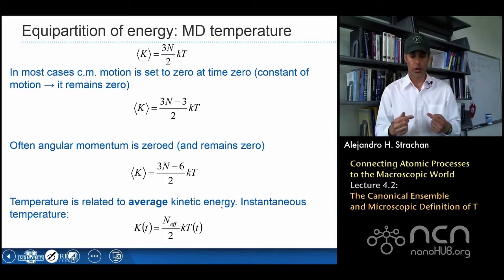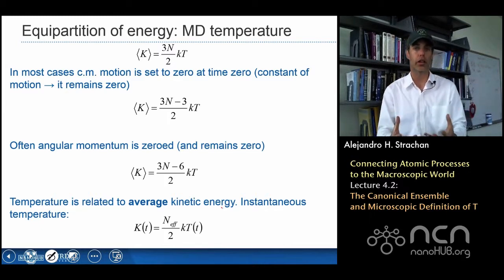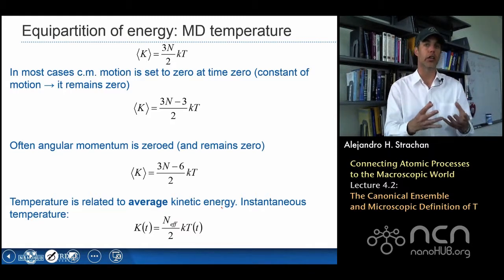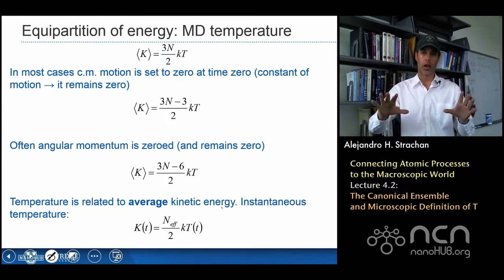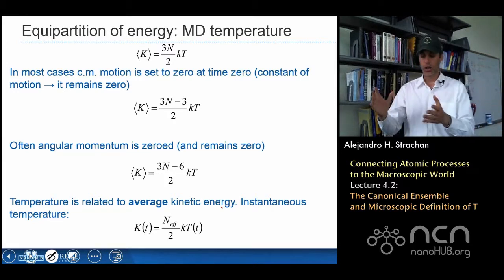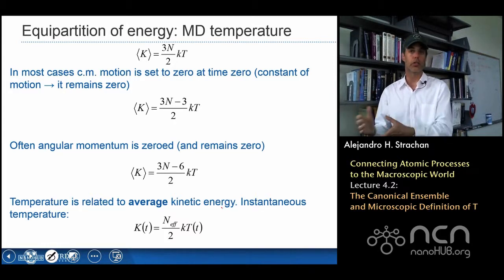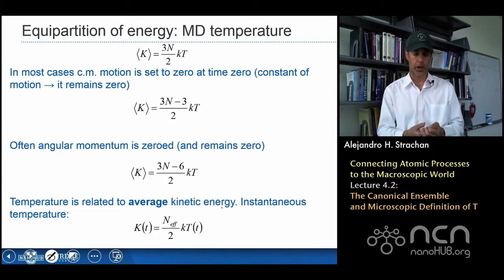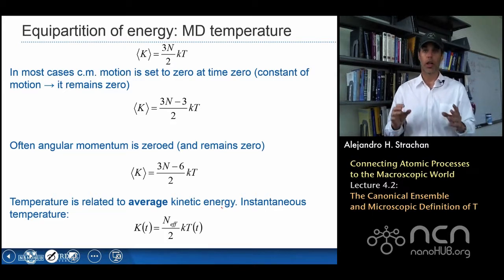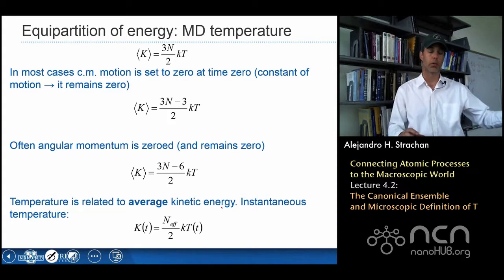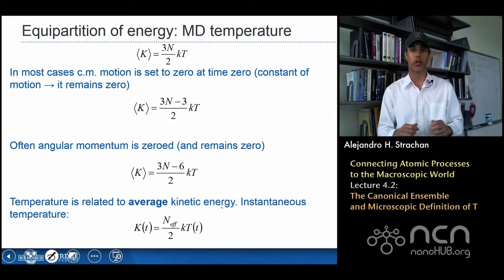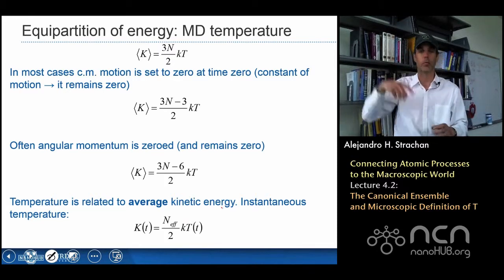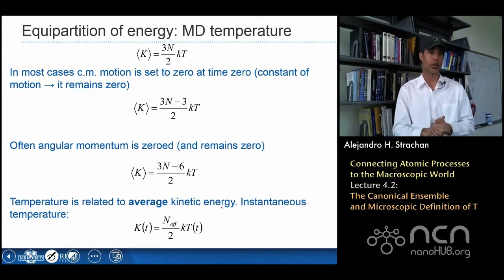In MD simulations we often abuse this relationship slightly and report an instantaneous temperature by computing the instantaneous kinetic energy and converting it using this formula. That's useful in many cases, but one must be aware that thermodynamic temperature is the long-time average of kinetic energy — not the instantaneous value. The kinetic energy oscillates in time, but temperature is the long-time average of that quantity.